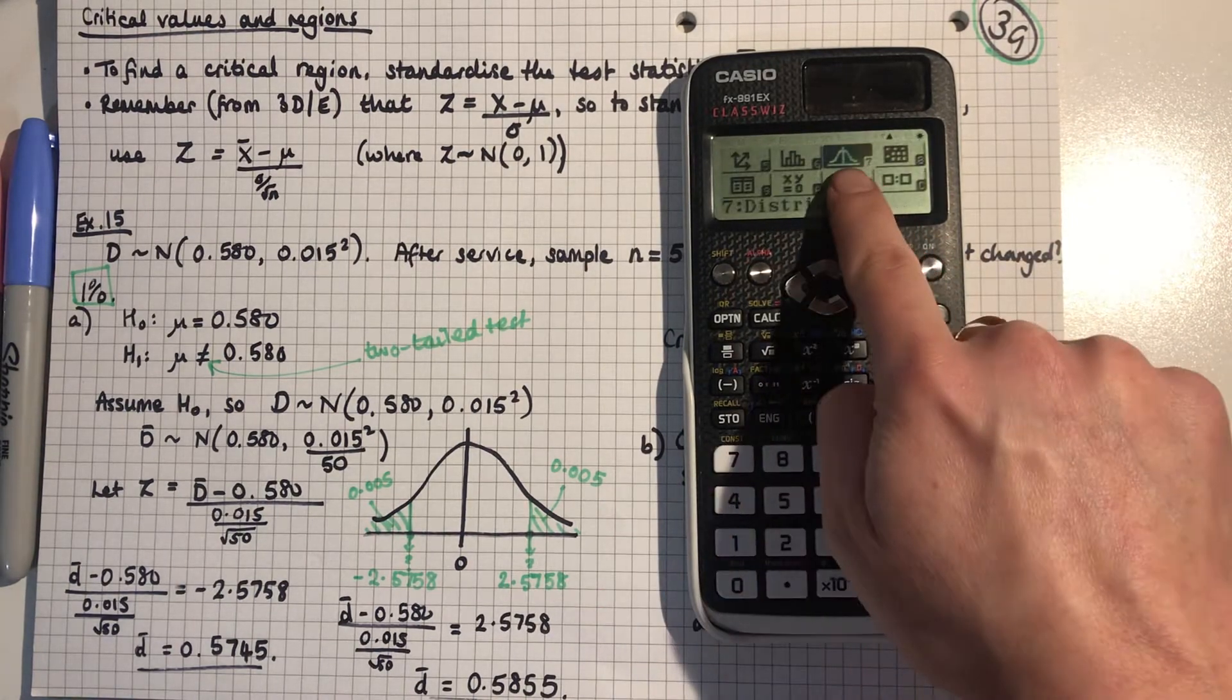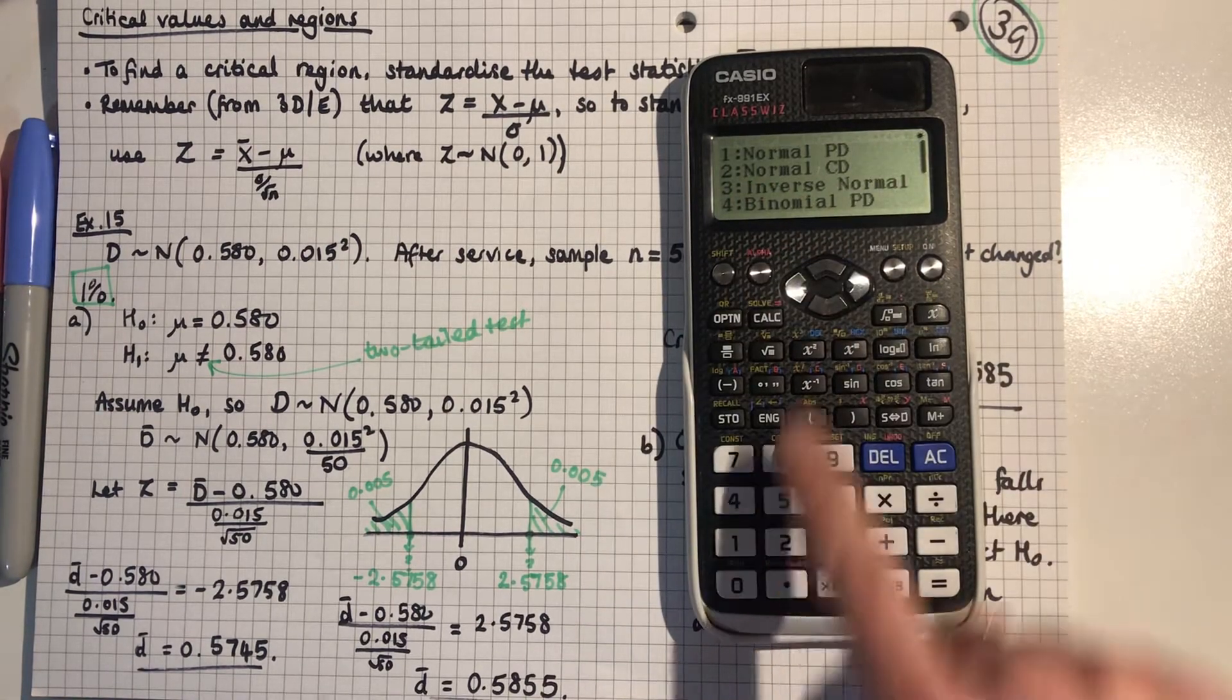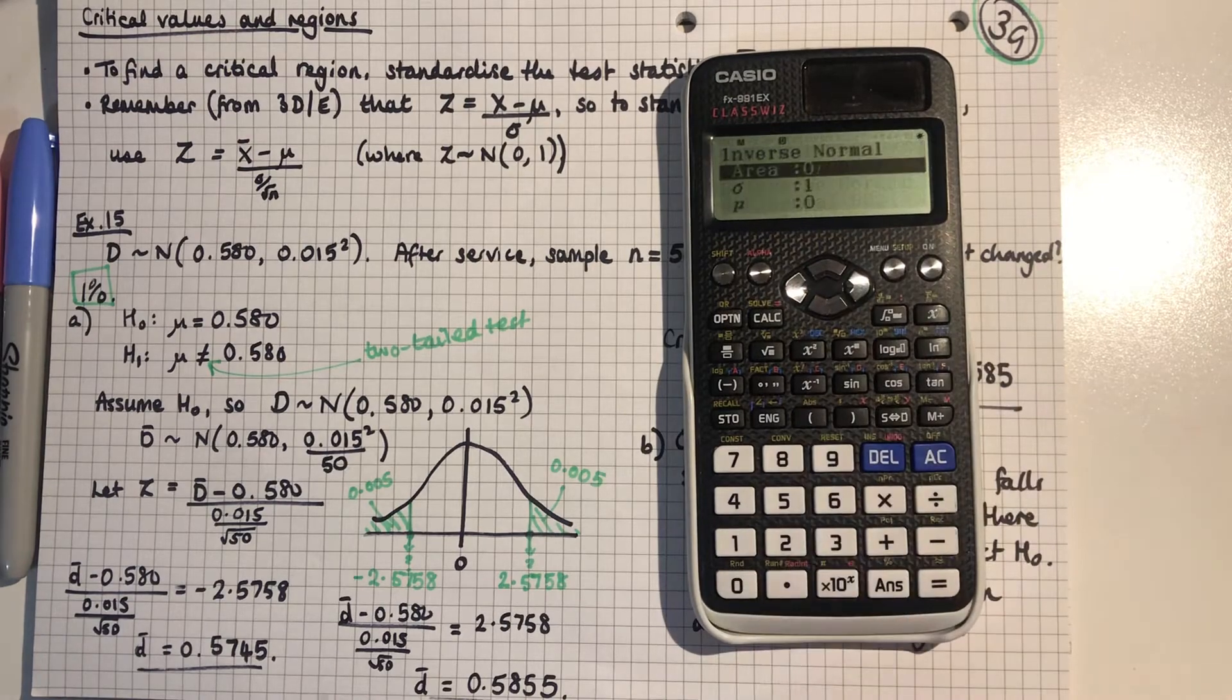So let me just point something out to you here. On the distribution menu and normal cumulative, sorry no, inverse normal, option 3 there.